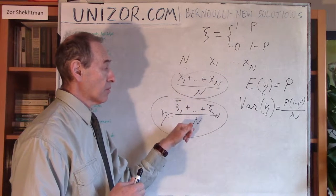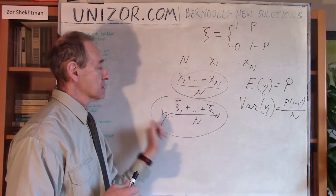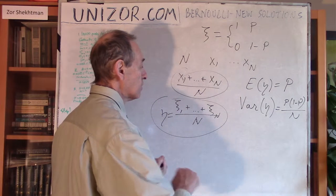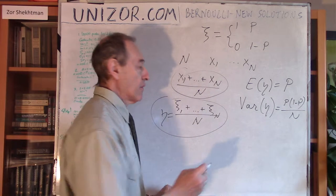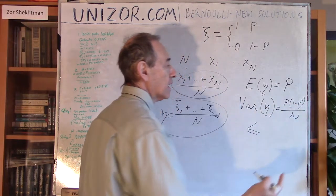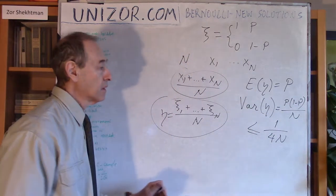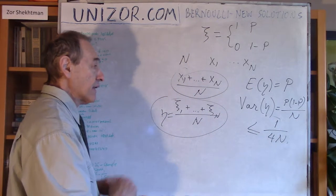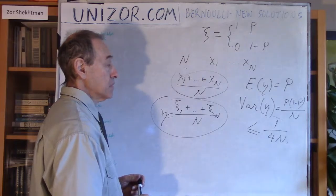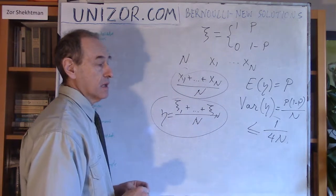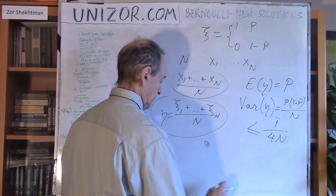We approximated eta with a normal variable — since it's a sum of independent identically distributed variables, its distribution is very close to normal by the central limit theorem. So we can consider a normal variable with the same mean and the same variance. Then I made a crude evaluation: since P times (1 minus P) is always less than or equal to 1/4, I used that as an upper bound for the variance. Then I can apply a 2-sigma rule.